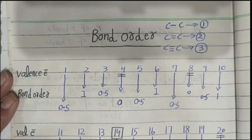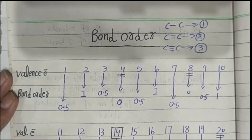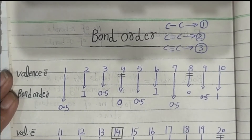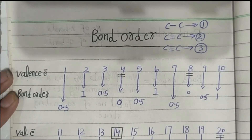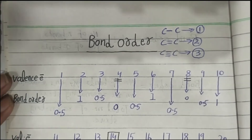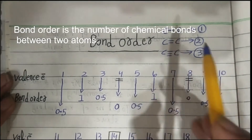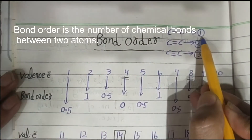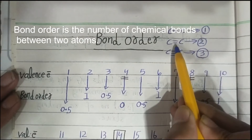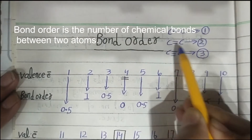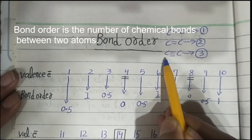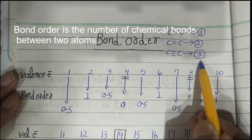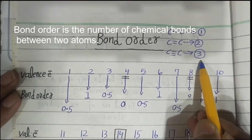Bond order represents the number of bonds between two atoms. A carbon-carbon single bond contains one bond order, a carbon-carbon double bond contains two bond order, and a carbon-carbon triple bond contains three bond order.